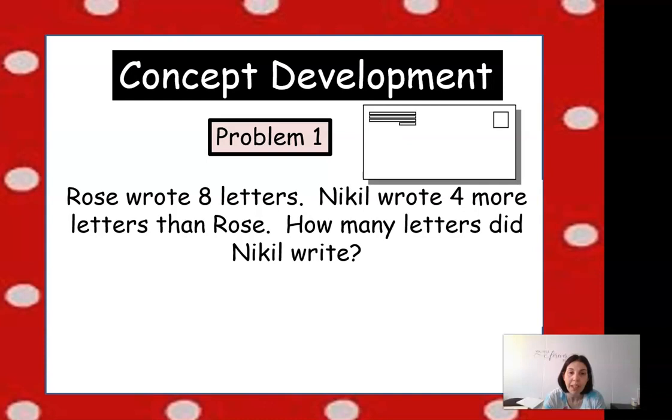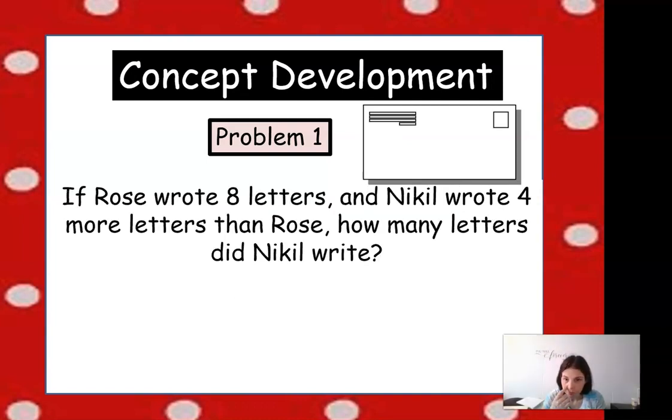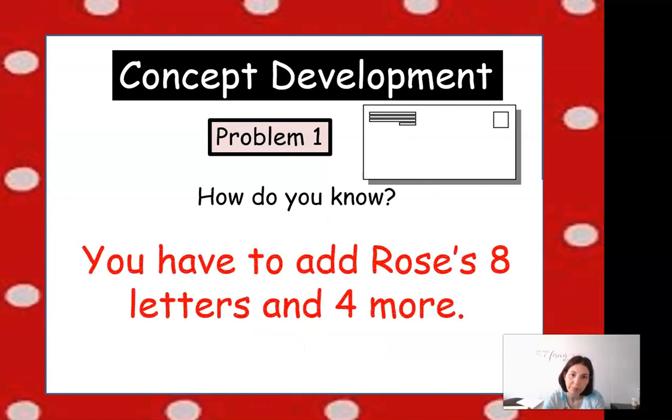So Rose wrote 8 letters, and Nikel wrote 4 more letters than Rose. If Rose wrote 8 letters and Nikel wrote 4 more, how many letters did Nikel write? So we're going to add 8 plus 4, which equals 12. So if you add the 2, that's where you get your answer. 8 plus 4 equals 12.